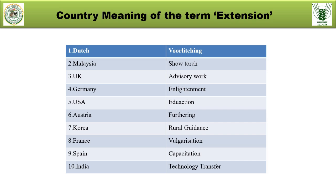The USA emphasizes that extension means education and education means extension — both focus on behavioral change. In Austria, it is called 'furthering,' and in Korea it is 'rural guidance.' In France, it is 'vulgarization,' meaning simplifying complex messages for the benefit of the common man. In Spain, it is known as 'capacitation,' emphasizing the building of capacities of the common man so he can take up difficult tasks in a simple way — that is the process of capacity building. In India, it is popularly known as the process of technology transfer.